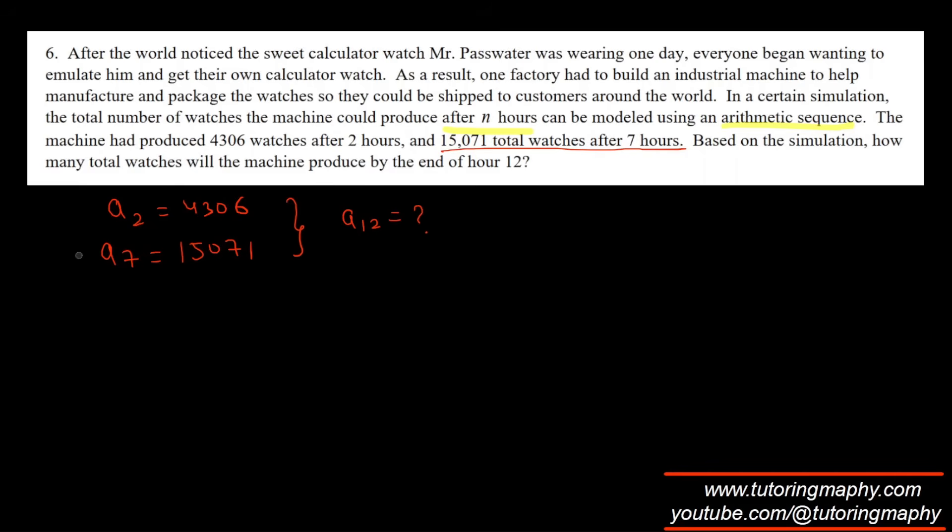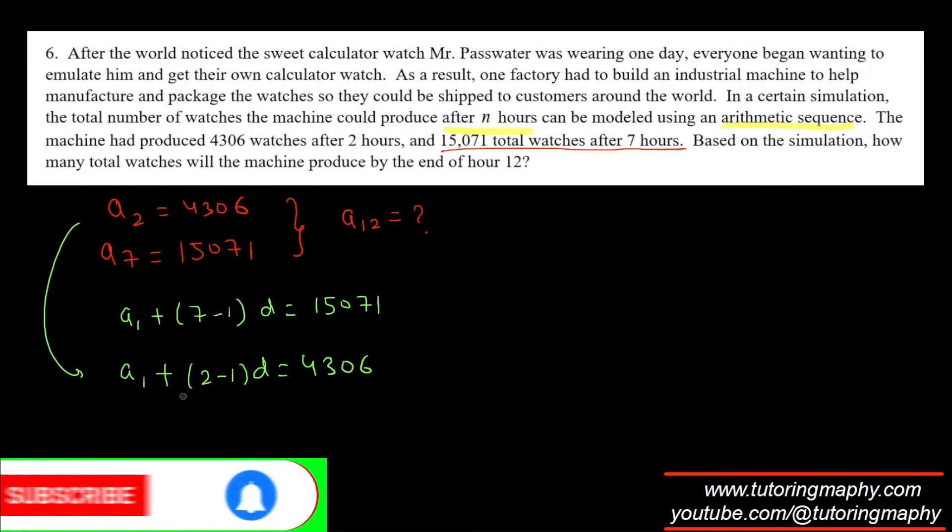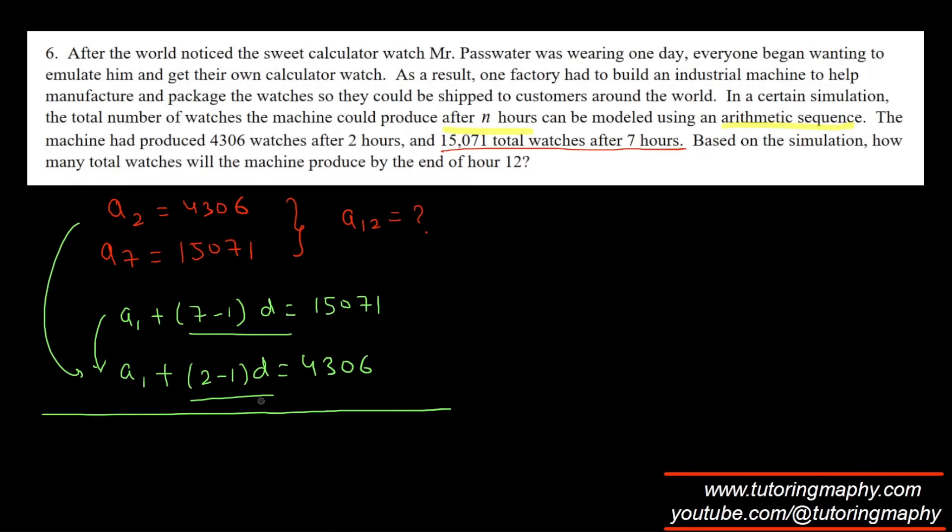After 7 hours it's 15,071. They're asking how many total watches at the end of the 12th hour, so a12 is what we need to find. I know that a2 can be written as a1 plus (2 minus 1) times d, which equals 4,306. And a7 can be written as a1 plus (7 minus 1) d, which is 15,071. In arithmetic, we subtract the equations.